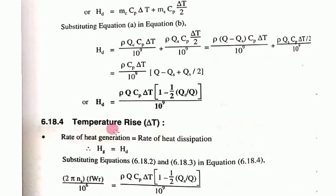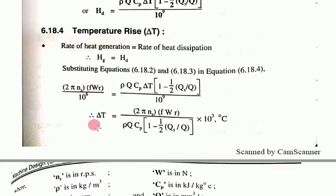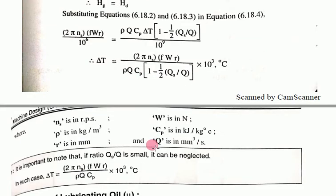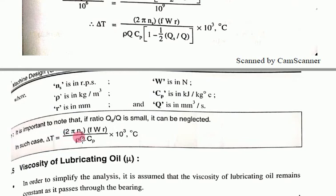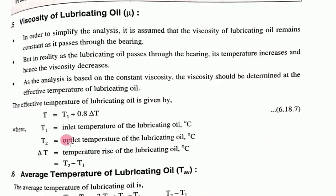Both equations — heat generation (2π ns f w r divided by 10 raised to 6) and heat dissipation — may be found in the design data book. Setting heat generation equal to heat dissipation, we can solve for delta t. All other values such as ns, f, w, and r are known, so delta t — the change in temperature — can be determined. The effective temperature of the lubricating oil is given by: t_effective equals t1 plus 0.8 times delta t, where t1 is inlet temperature, t2 is outlet temperature, and delta t equals t2 minus t1.